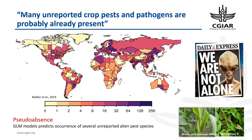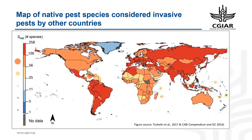Thanks to new technologies such as next-generation sequencing, some of these pathogens are being recognized. For example, maize-associated virus was recognized while investigating maize lethal necrosis, and yam virus Y, which causes asymptomatic infection, was also identified. Both viruses are now recognized to be widely distributed in maize and yam production areas.